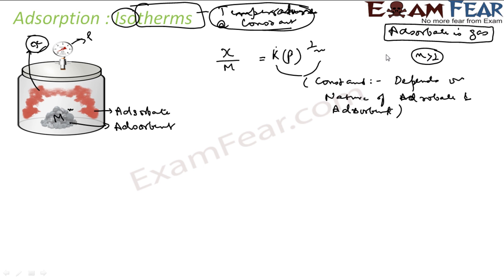n can be greater than 1, so 1 by n is always less than 1. This is what he proposed: x by m equals k p to the power 1 by n. k and n are values which experimentally they have found. For example, for charcoal and hydrogen gas, k and n will have some value. For charcoal and chlorine gas, k and n will have some other value. This is what they have and this can be validated.